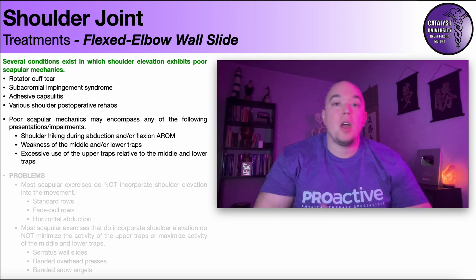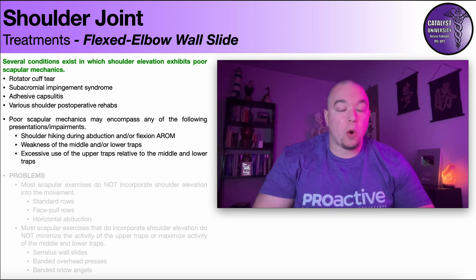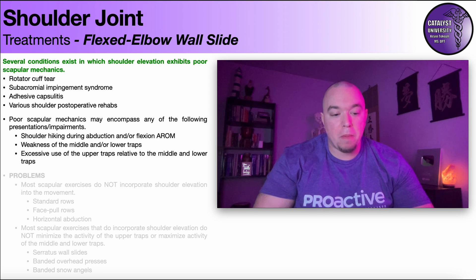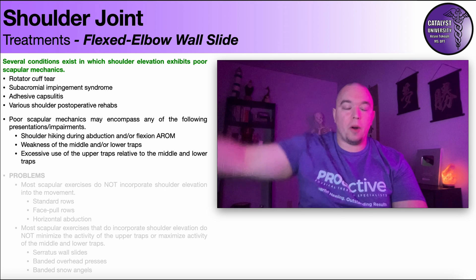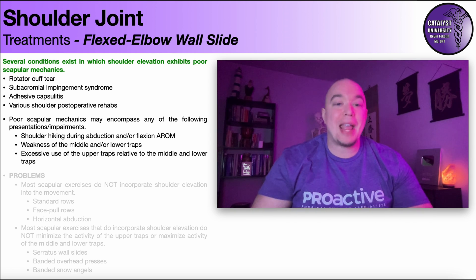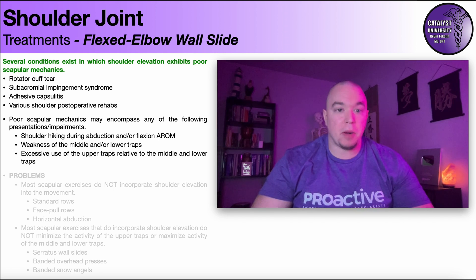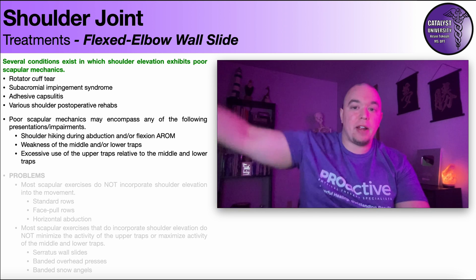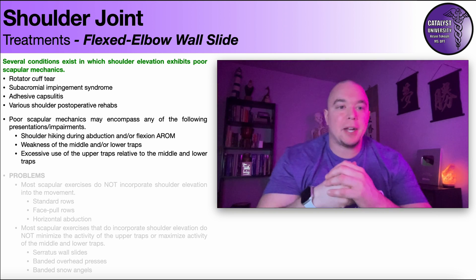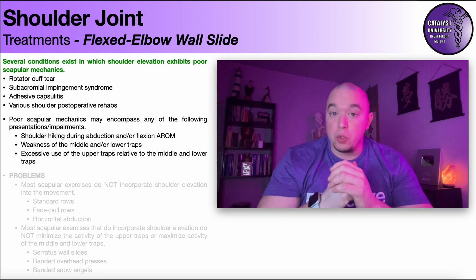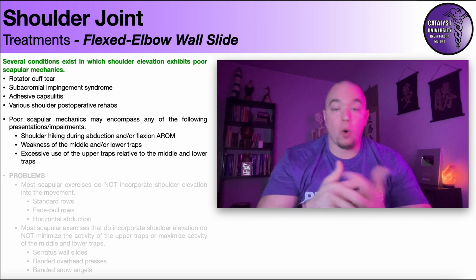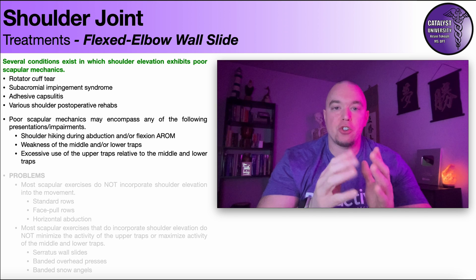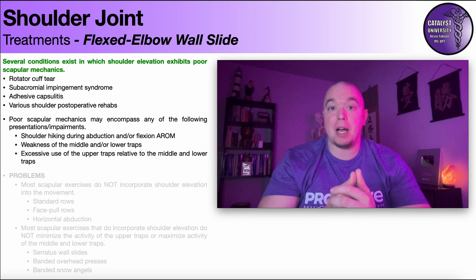You can see some examples here. For example, a rotator cuff tear or subacromial impingement syndrome. Generally with impingement syndrome the impaired scapular mechanics are a lot more subtle — you may have somebody where there's absolutely no shoulder hike or it's very minimal. But there tends to be impaired scapular mechanics with subacromial impingement syndrome. Adhesive capsulitis, aka frozen shoulder, and then various shoulder post-operative rehabs: total shoulders, reverse total shoulders, rotator cuff repairs, etc. You can have the shoulder hike and impaired scapular mechanics with any of these and possibly more.